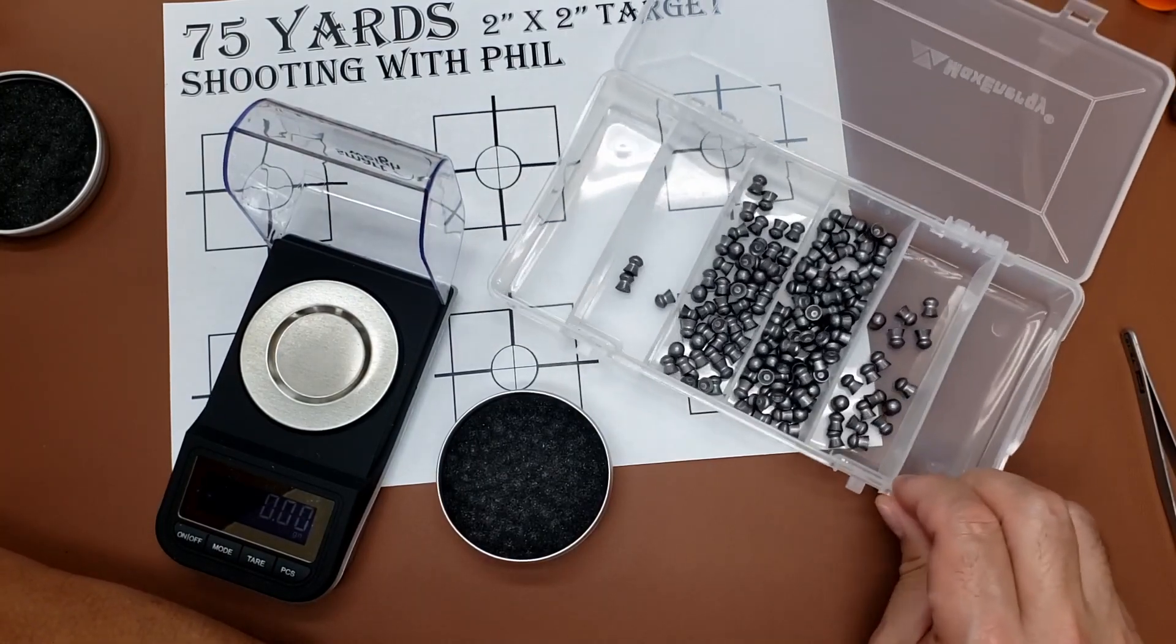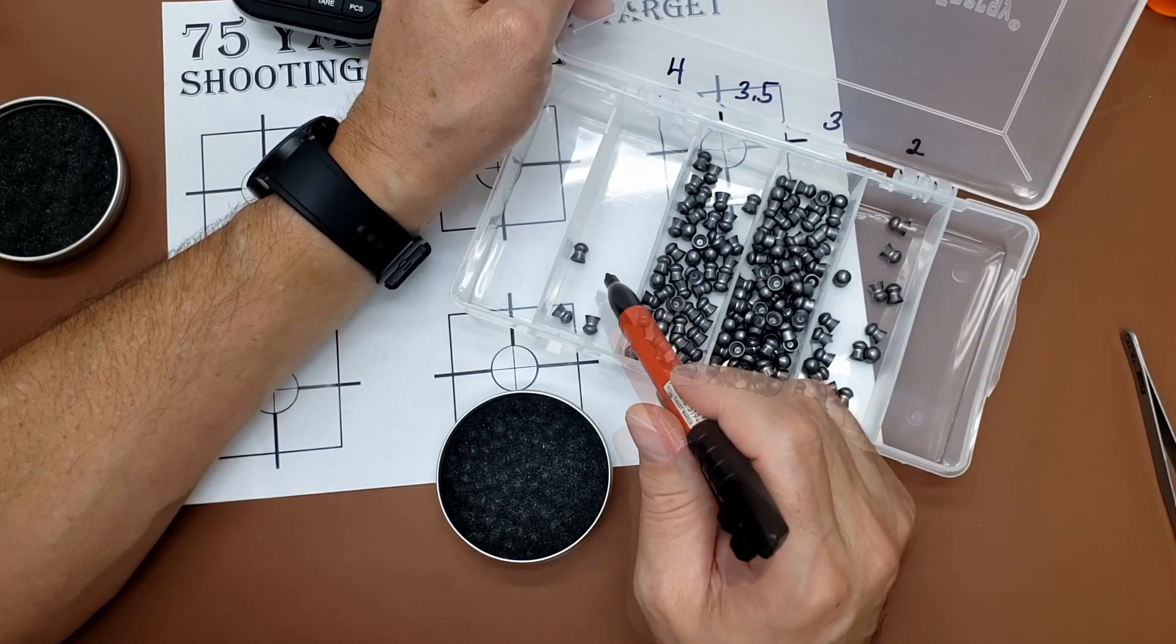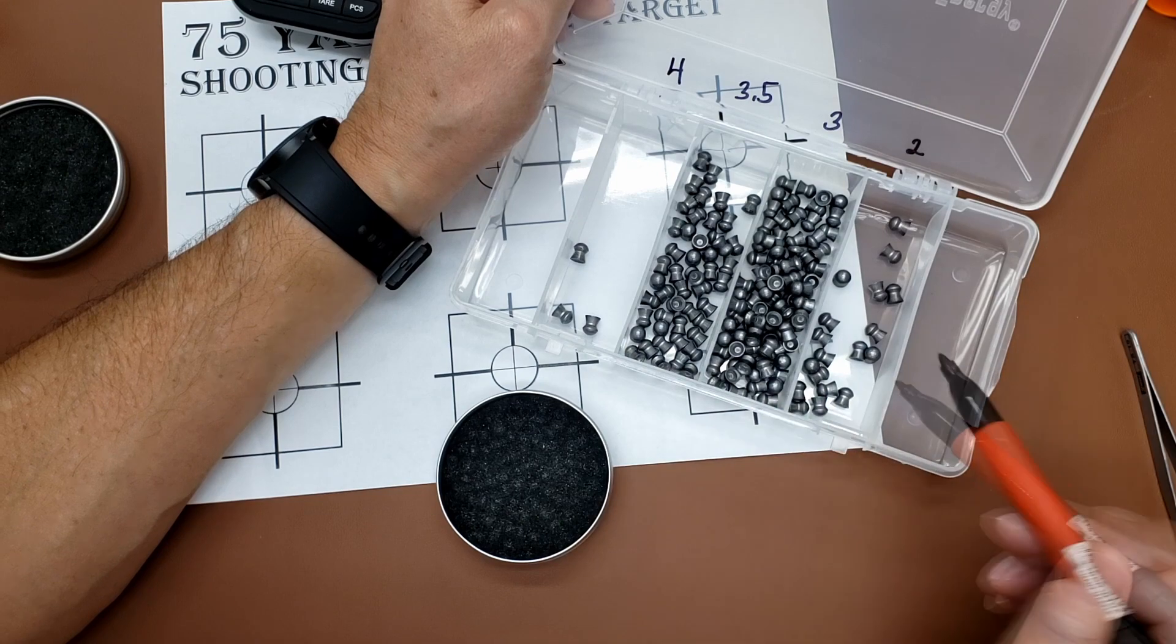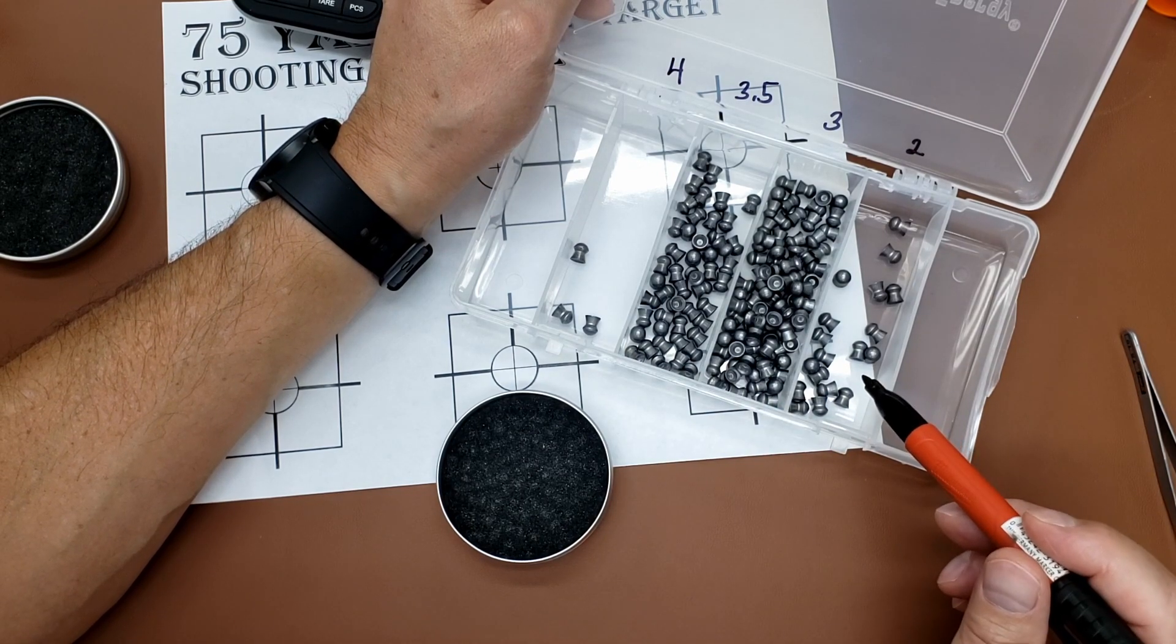Okay, there we have it. The heaviest pellet was 25.46, and the lightest pellet was 25.21.